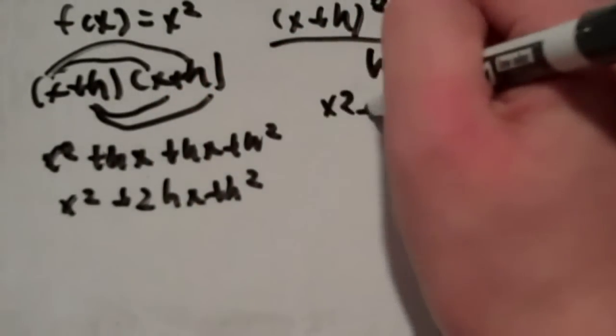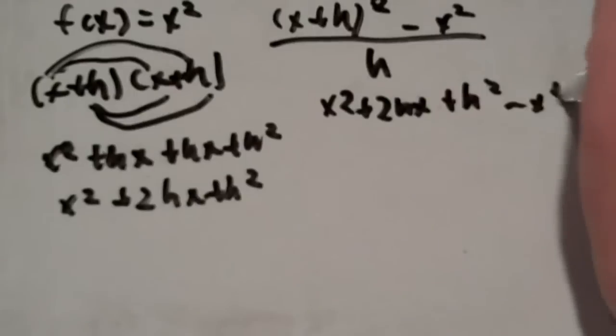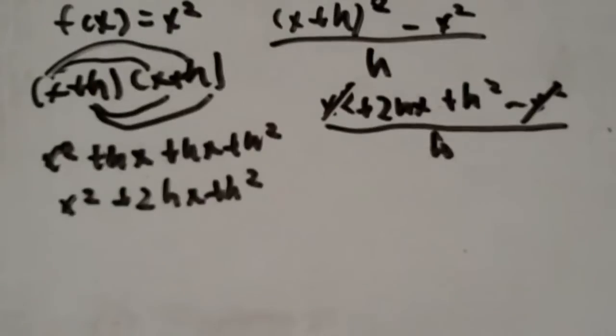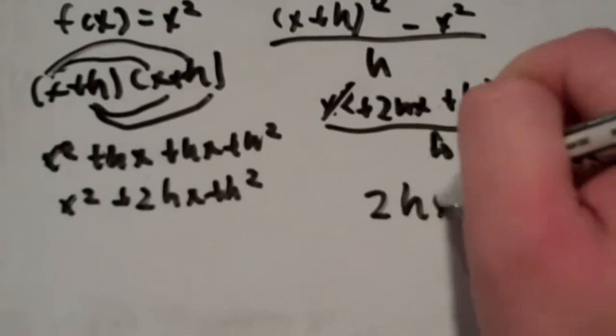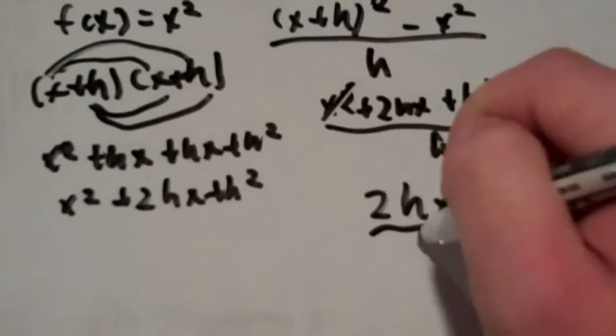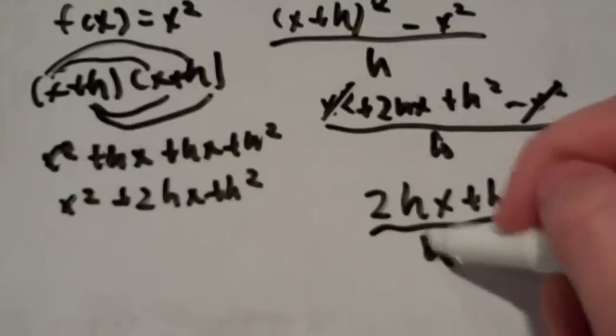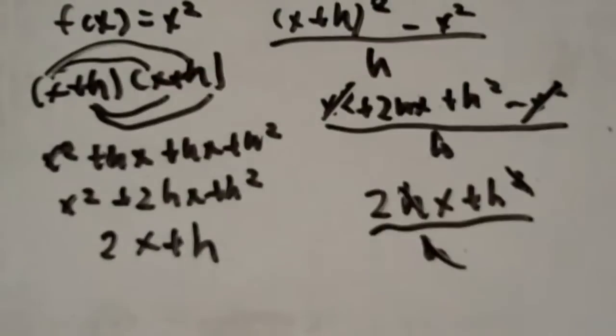Now we'll plug it back in. So we have x squared plus 2hx plus h squared minus x squared all over h. And we'll cancel the x squareds, because that's what we do. We simplify. And we have 2hx plus h squared all over h. Now, at this point, all of your numbers or variables or whatever should have an h in them. You should have no number or variable without an h in it. So now we can just cancel the h's. That'll give us 2x plus h. That's our derivative.